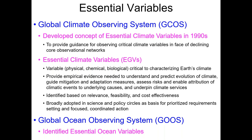They came up with a list of climate variables and it turned out to be quite useful within the climate community. They were able to go to their funding organizations and argue that these are the variables that we absolutely have to keep observing if we're going to understand climate change. With that success, it was adopted by many other communities — first by the Global Ocean Observing System, who identified essential ocean observables, but now by many others including biodiversity variables.